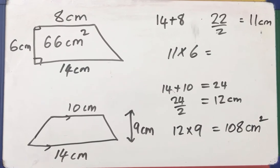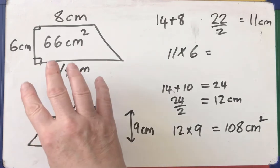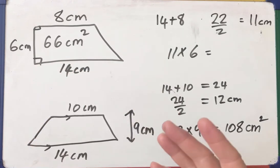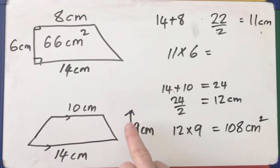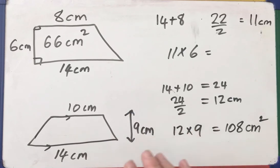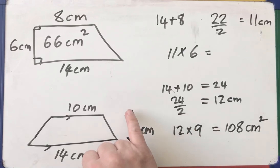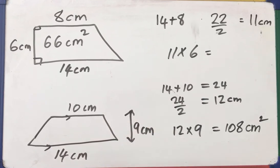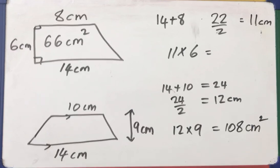There is another video on what you do when you're given the area and you have to find the missing distance. I'll be doing another video on the area of a trapezium where you have to calculate the missing perpendicular height when you're given the area. But for now, for just finding the area of a trapezium, I really hope this helped. Bye-bye.